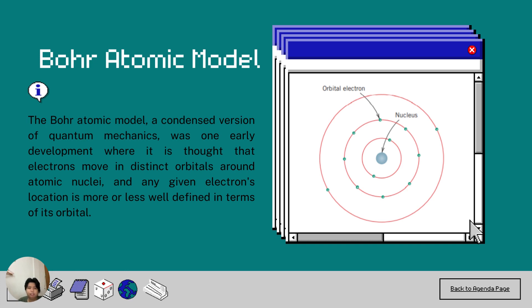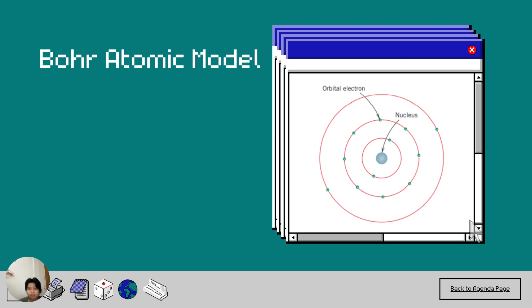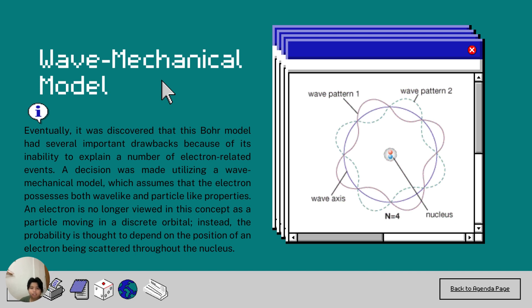For the next slide is Bohr atomic model. It is the idea that electrons move in discrete orbitals around atomic nuclei and that each given electron's location is more or less clearly defined in terms of its orbital dates back to an early development of quantum mechanics. Eventually, it was discovered that this Bohr model had several important drawbacks because of its inability to explain a number of electron-related events using a wave mechanical model, which assumes that the electrons have both wavelength and particle-like features.